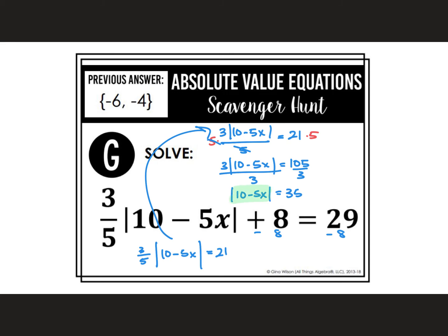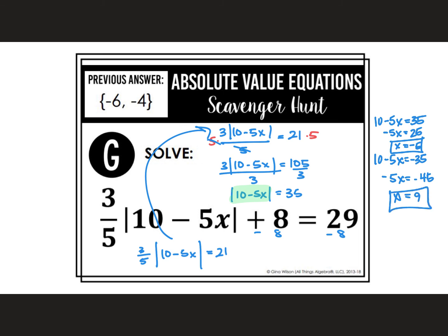So 10 minus 5X could be 35, or 10 minus 5X could be negative 35. For the first equation, negative 5X equals 25, so X equals negative 5. For the second, negative 5X equals negative 45, so X equals 9. The answer as a set is {-5, 9}.